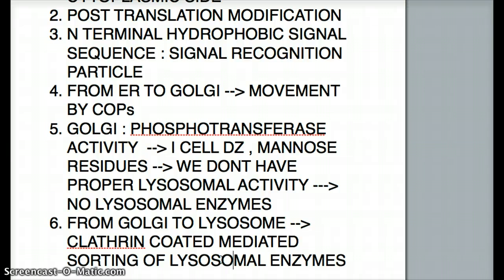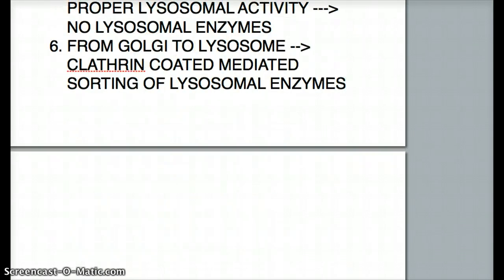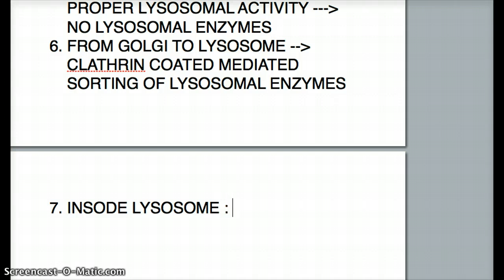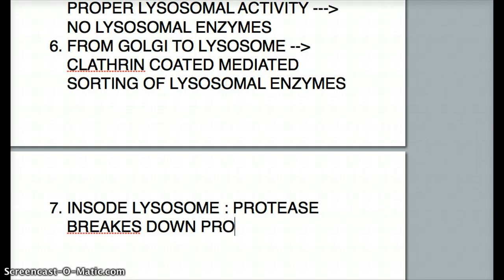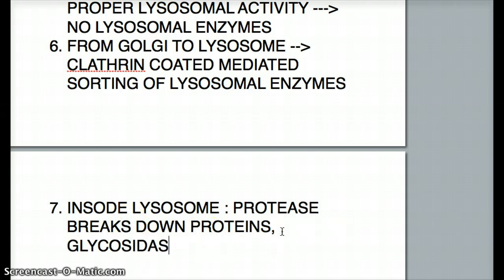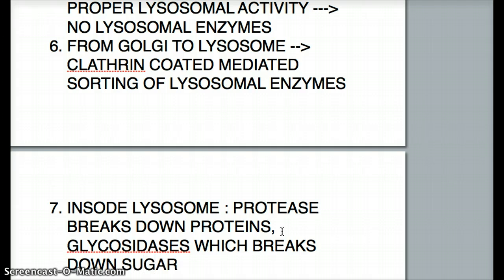There are so many steps between ribosomes and the Golgi, and if any process is inhibited, we're not going to have a proper protein. If all these processes are well done, the next step is inside the lysosome. Inside the lysosome, there are two important proteins: protease, which breaks down proteins, and glycosidase, which breaks down sugars. Knowing these specific names for lysosomal enzymes is very, very important.